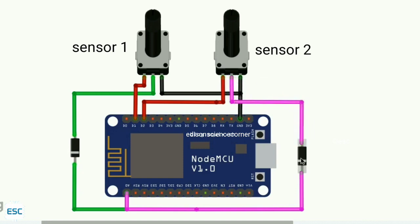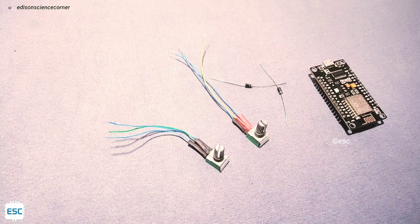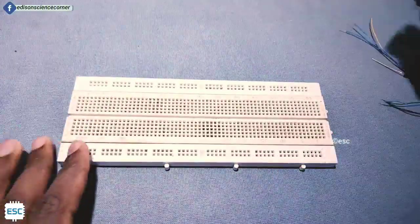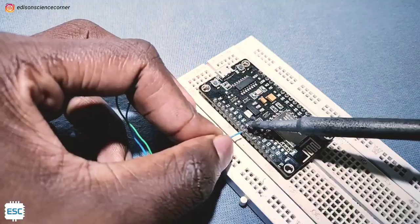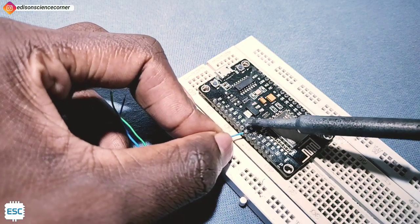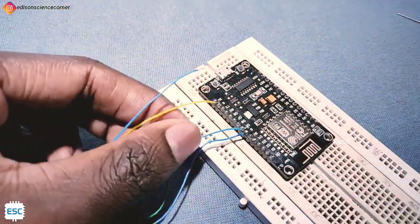I used two diodes to avoid overlapping of data. Now let's build our circuit. First, I placed NodeMCU on breadboard. Then I soldered ground of both variable resistors to ground.